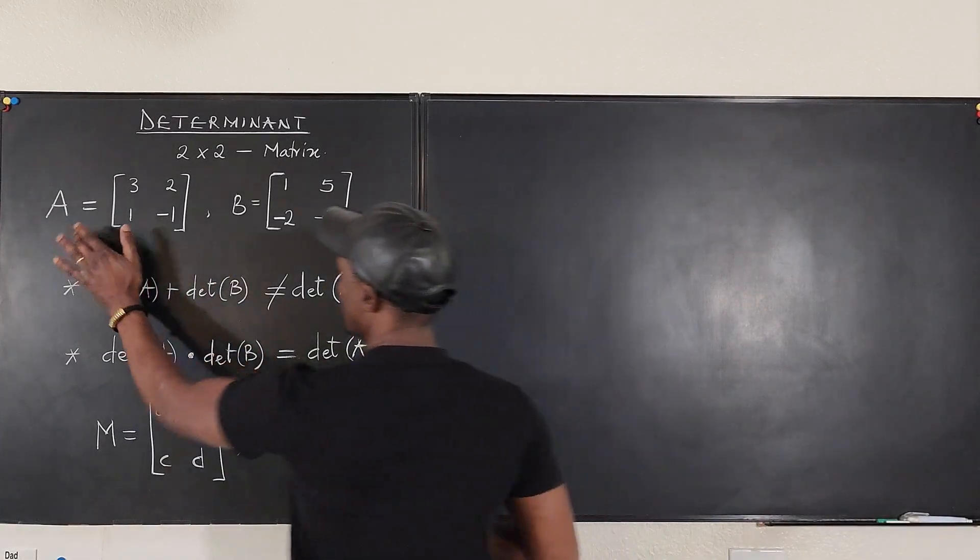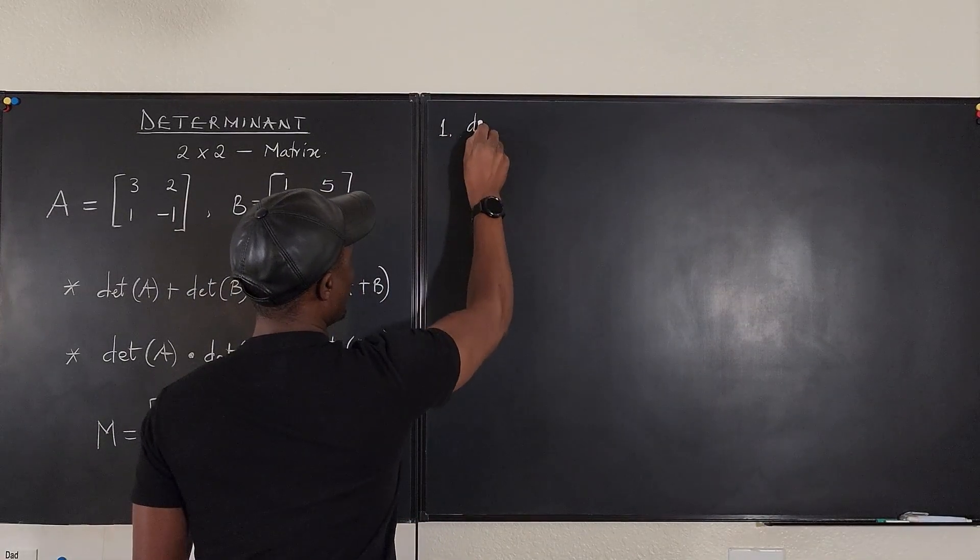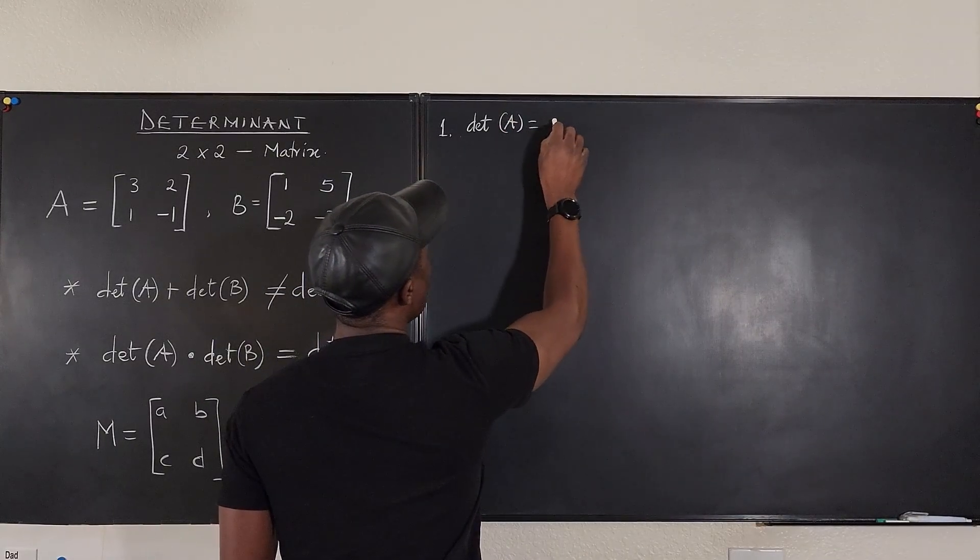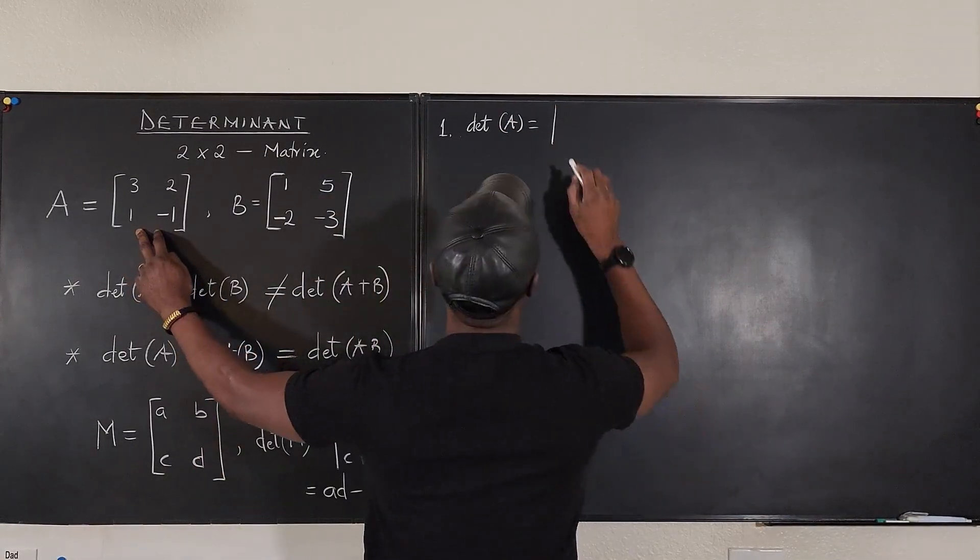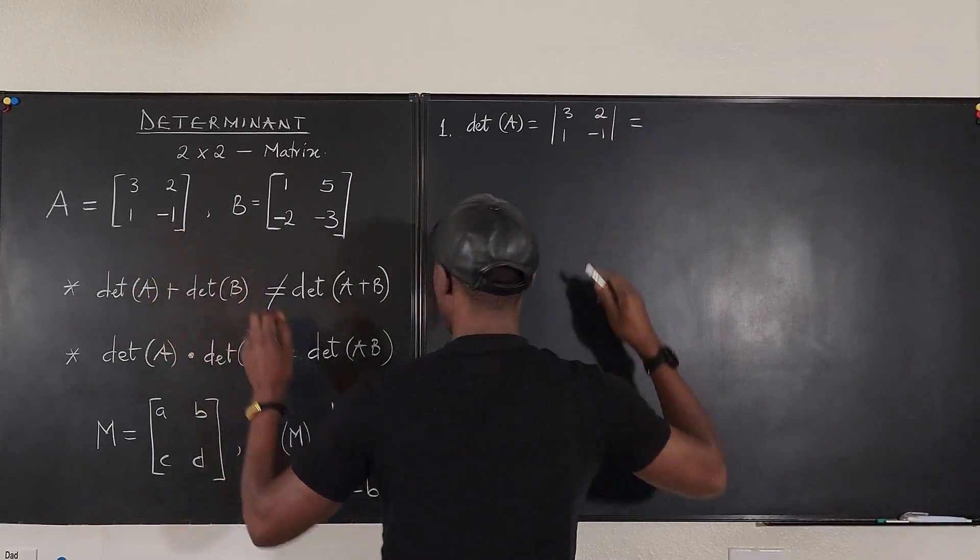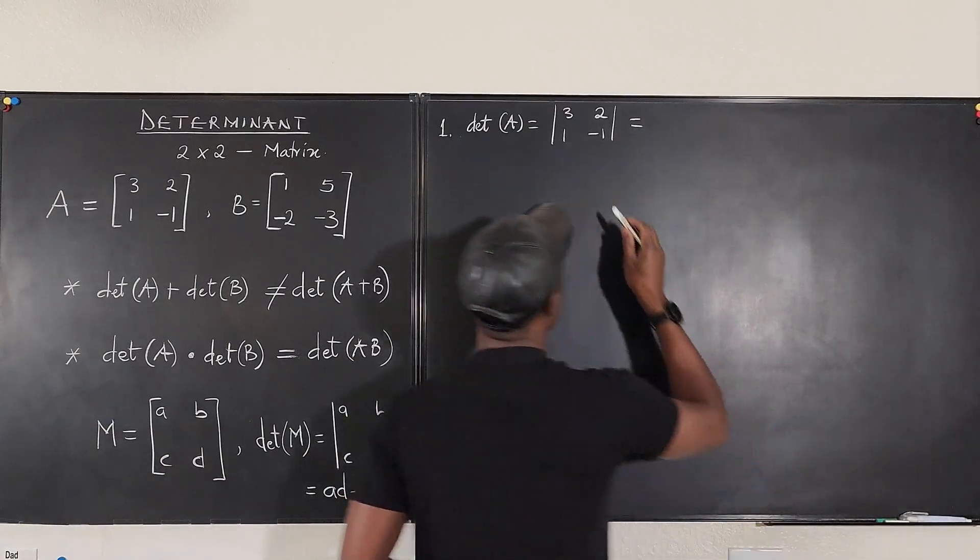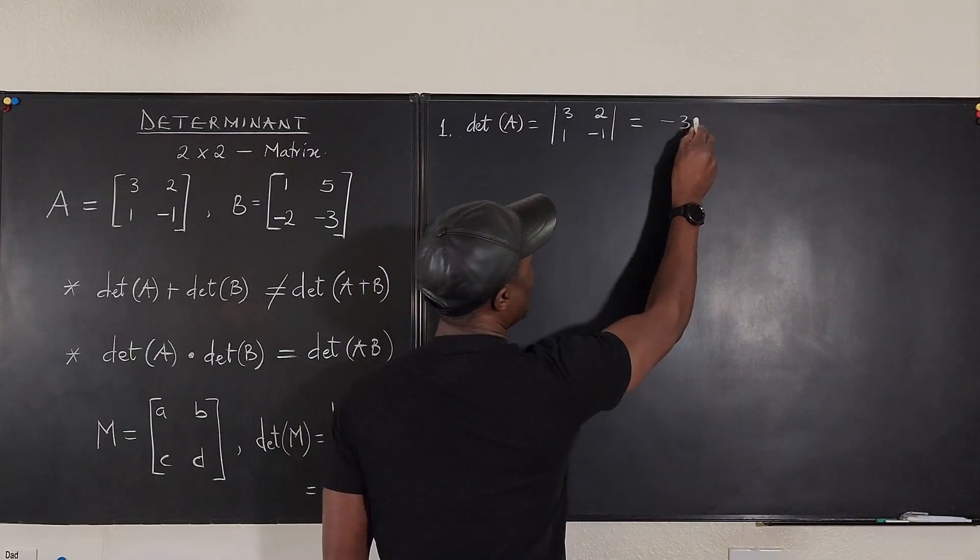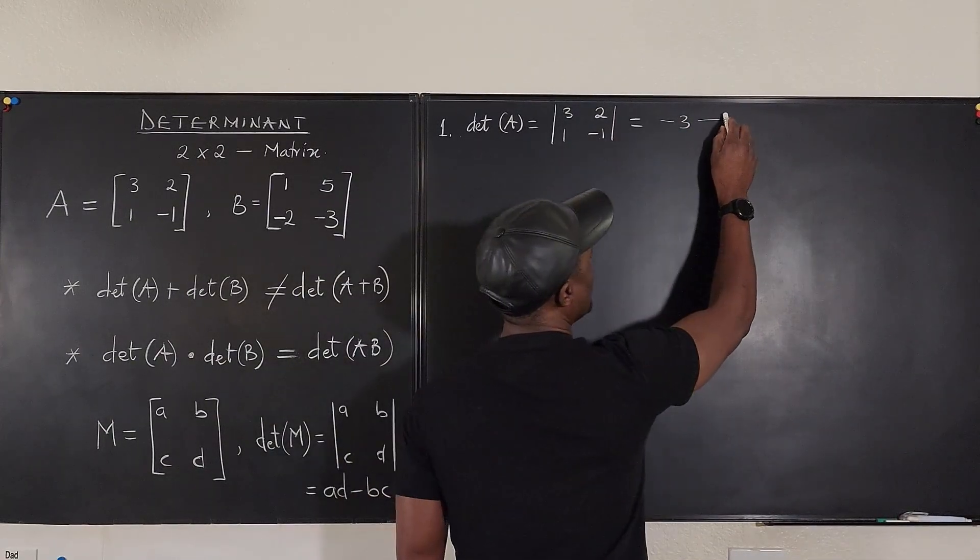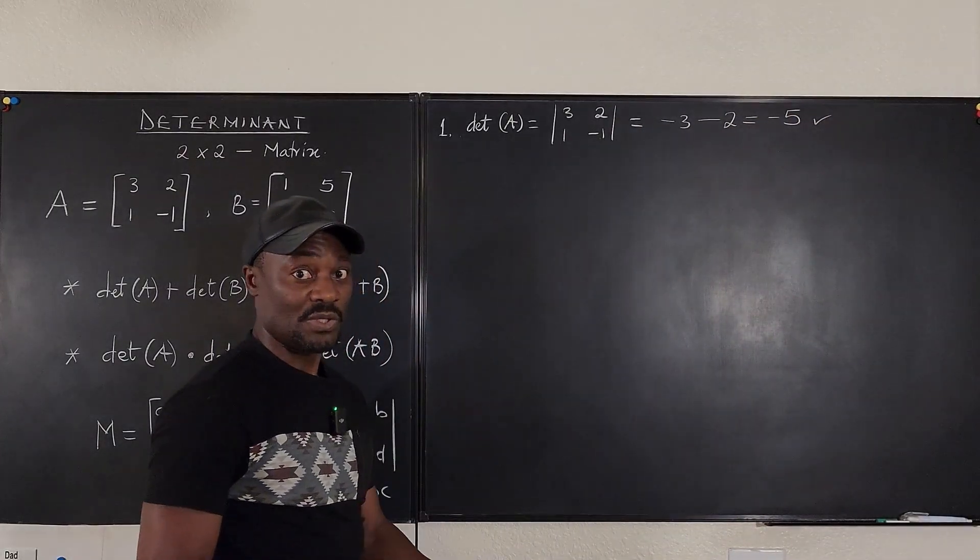So let's compute the determinant of A. Number one. Determinant of A will be equal to, we put this here, 3, 2, 1, minus 1. The determinant using this rule will be A times D minus B times C. A times D is minus 3 minus B times C is going to be 2. So your answer is minus 5. We're done. It's so simple.